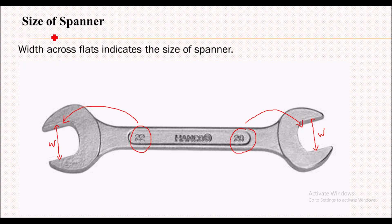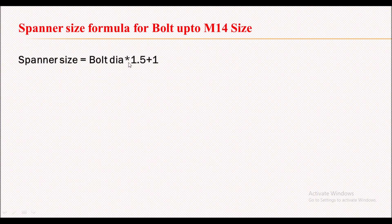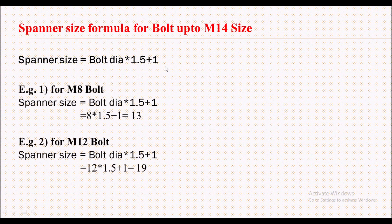Now how is the size of a spanner determined if the bolt size is known to us? For bolt up to M14 size, the spanner size formula will be: bolt diameter × 1.5 + 1. So that will be your required spanner size.